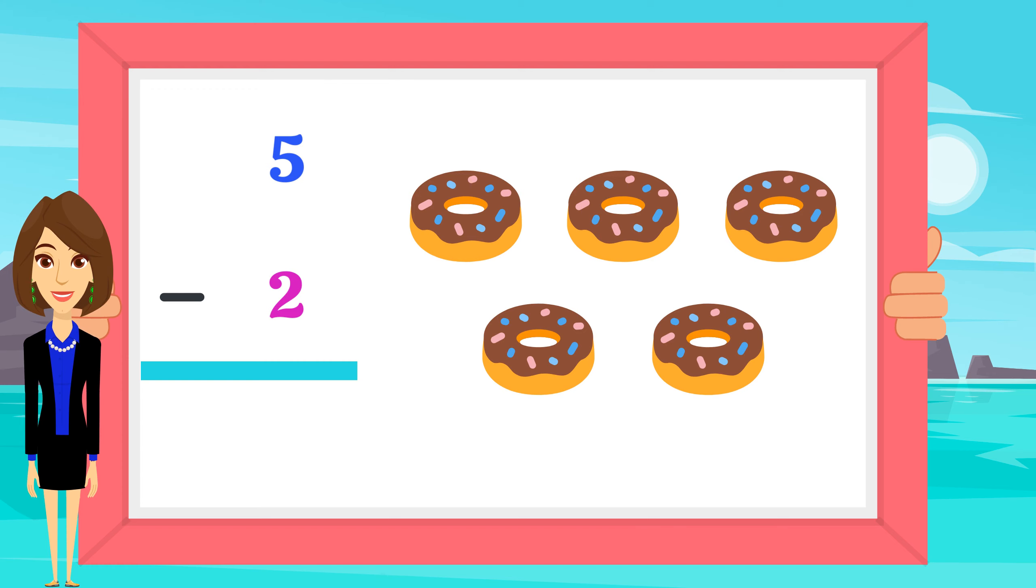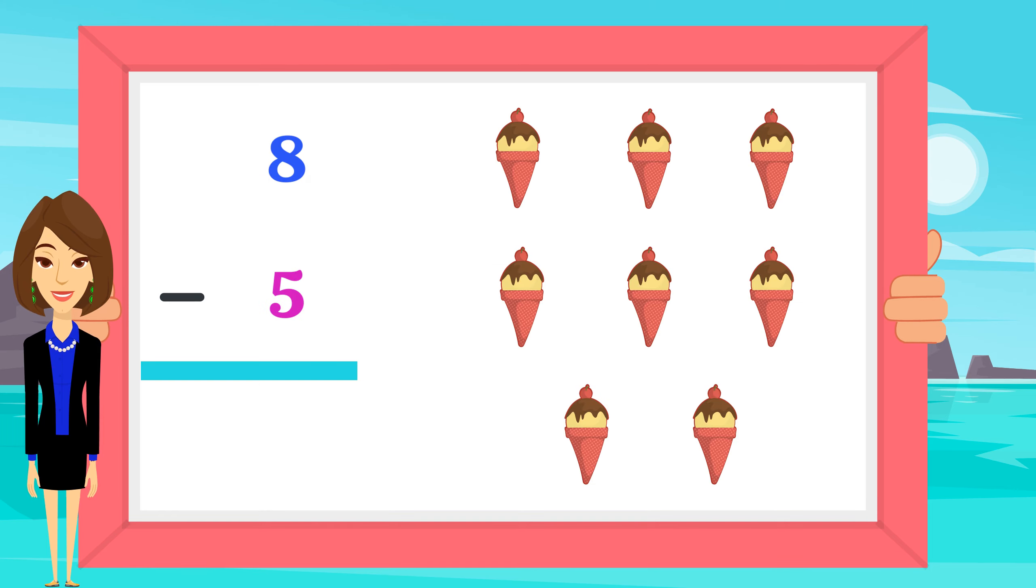Taking away two from five will give you three, so five minus two is three. What is eight minus five?